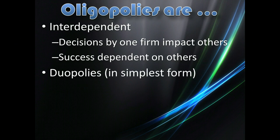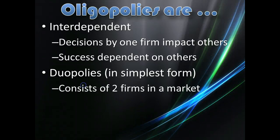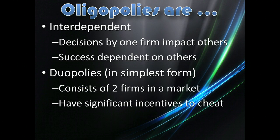In its simplest form, we could talk about an oligopoly as a duopoly, where there are two actors. More than a monopoly where there's one, a duopoly has two firms, and each firm is called a duopolist. In a duopoly, there tends to be a very significant incentive to cheat on your partner — to try and take advantage of the situation to maximize your profits at the expense of the other firm in your market.